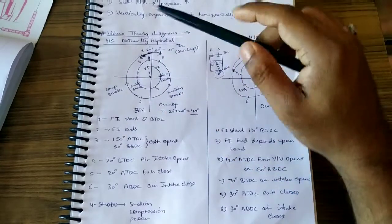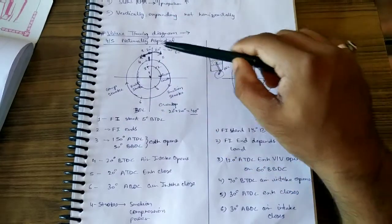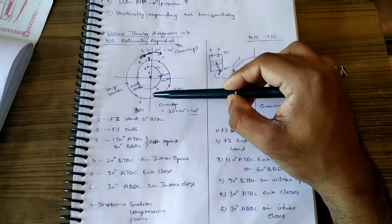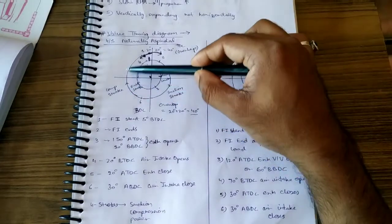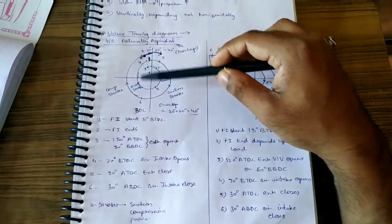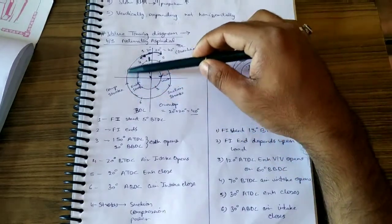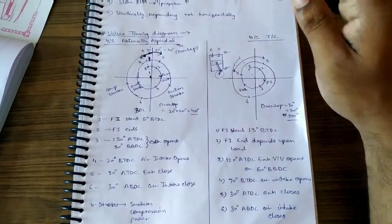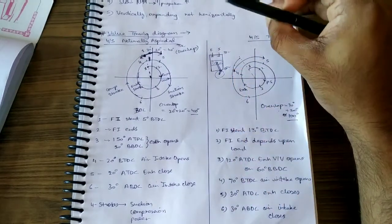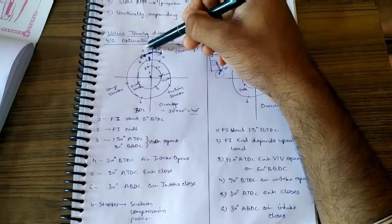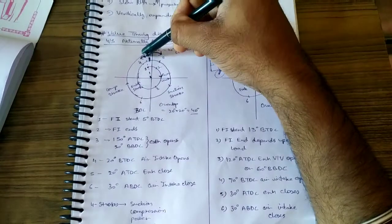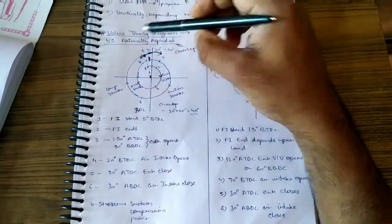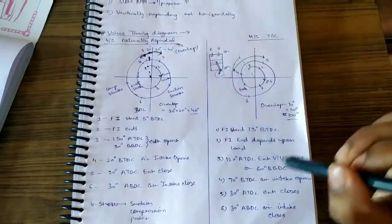The piston then goes up again, and this time both the exhaust and inlet valves are closed. In the compression stroke, it compresses the air, and then fuel injection will again take place. This completes one full cycle.